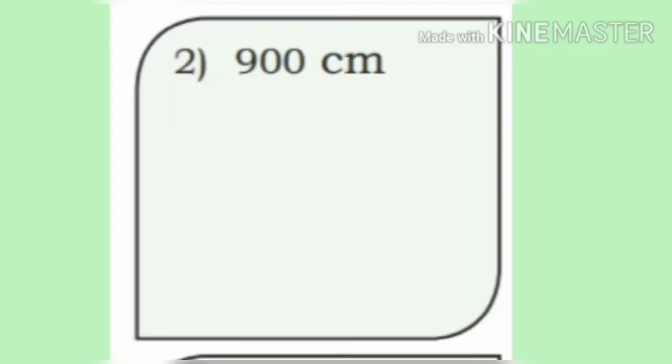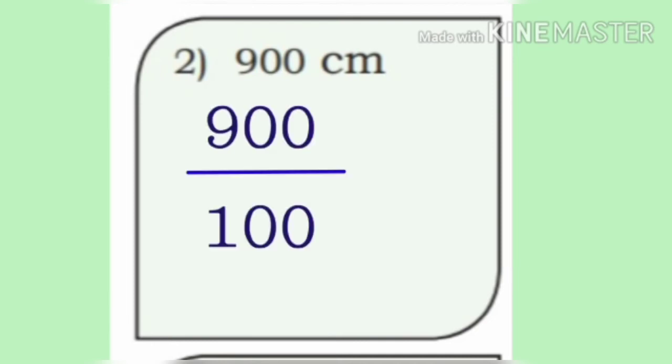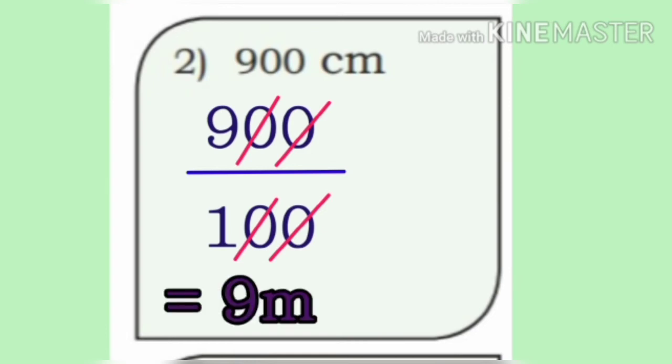Now, second one: 900 centimeter. Let us divide 900 by 100. Cancel the zeros on numerator and denominator. We get the answer as 9 meter.